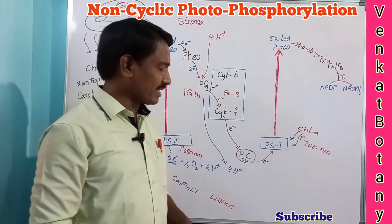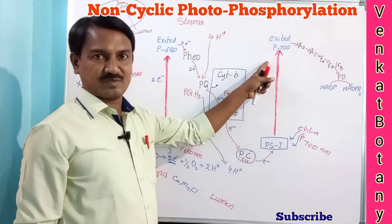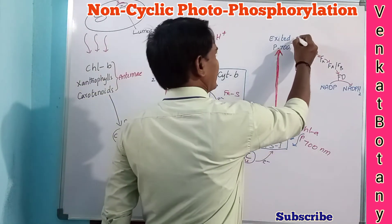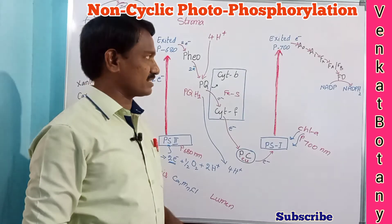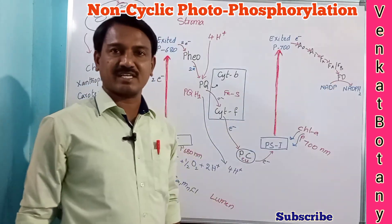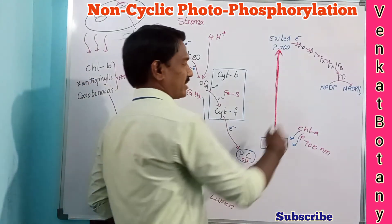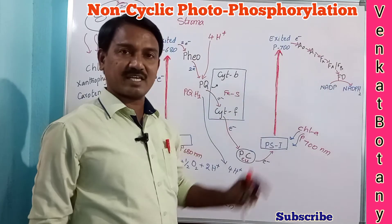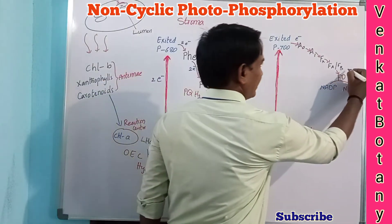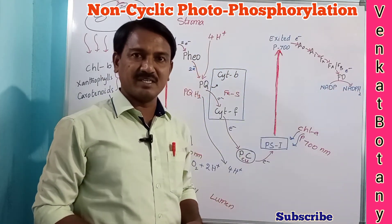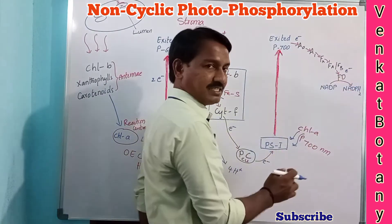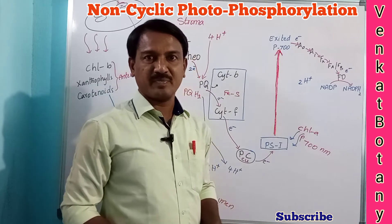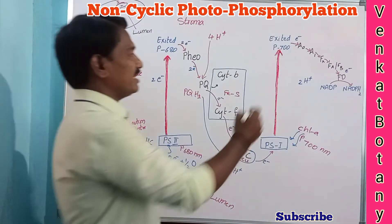Photosystem 1 receives energy from chlorophyll a at 700 nanometer wavelength and reaches an excited state. At the same time, electrons received from plastocyanin are transferred through intermediate substances A0, A1, Fx, Fa, or Fb, and finally to ferredoxin (Fd). Ferredoxin is present on the thylakoid membrane towards the stroma side. From ferredoxin, two electrons are transferred to NADP, which also accepts two protons from the stroma, converting into NADPH2.